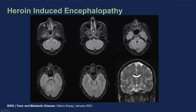This is another case — a case of heroin-induced encephalopathy — where we see these classical changes in a butterfly pattern in the posterior fossa in the cerebellum, as well as changes along the corticospinal tract.